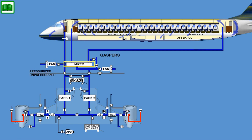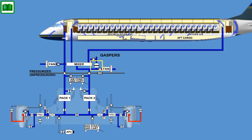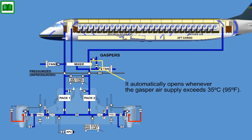The gasper air distribution system provides air to each pilot and passenger position. Air flowing from the mixing manifold through the gasper check valve supplies the gasper ventilation system. When the gasper valve is opened, air from the right recirculation fan supplies the gasper system. During normal system operation, the gasper shutoff valve remains closed. It automatically opens whenever the gasper air supply exceeds 35 degrees Celsius (95 Fahrenheit), preventing hot air from blowing onto the passengers.